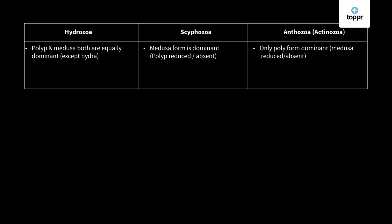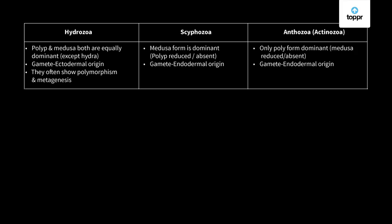In hydrozoa both forms can be seen; in scyphozoa medusa is dominant; in anthozoa polyp form is dominant. Regarding gametes, in hydrozoa they are ectodermal in origin, whereas in scyphozoa and anthozoa the gametes are endodermal in origin. Hydrozoa often show polymorphism and metagenesis because it has both polyp and medusa forms.